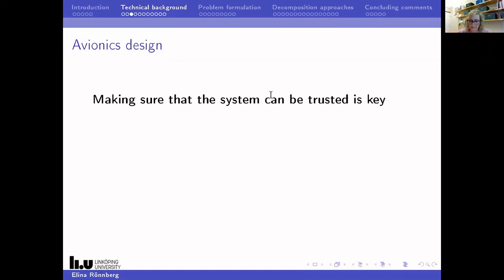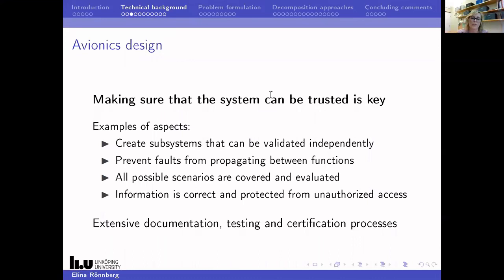Examples of aspects you need to consider when designing an avionics system: you need to create subsystems that you can validate independently, prevent faults from propagating between different functions, and ensure that all possible scenarios are covered and evaluated. For example, if you have if-statements handling different things, you don't only need to cover all cases — you must also understand what happens if the computer crashes during that part of the code. You also need to make sure that data sent between different applications is correct and protected from unauthorized access, with extensive documentation, testing, and certification processes.